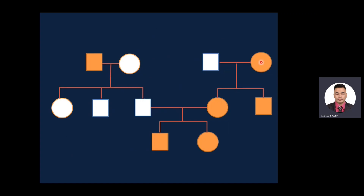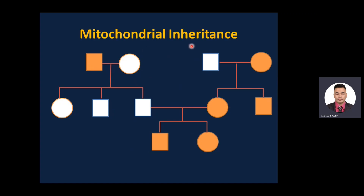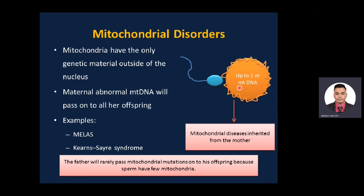Looking at a pedigree to understand mitochondrial inheritance: the affected mother has the disease, and all her generations are also affected. The affected father's generations do not have the disease. This is a classic pedigree of mitochondrial inheritance — the mother transmits the disease to all her generations, but the father cannot, because of the lack of mitochondrial substance in sperm. The mother's eggs carry a large amount of mitochondrial DNA, which is transmitted to all her offspring.